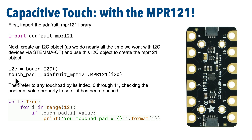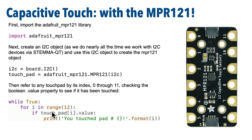Then, we'll create an object that will hold all 12 touchpads, which I'll call touch_pad, and we do that with the Adafruit_MPR121 library, using dot notation to access the MPR121 class, and we pass in the I2C object we just created. Then, if we want to detect if a pad has been touched, we refer to an individual pad via its index number. We can check all pads using a for loop, looping through a range of 12, which takes us from index values 0 through 11, and if an individual touchpad's dot value property is true, then that pad has been touched.